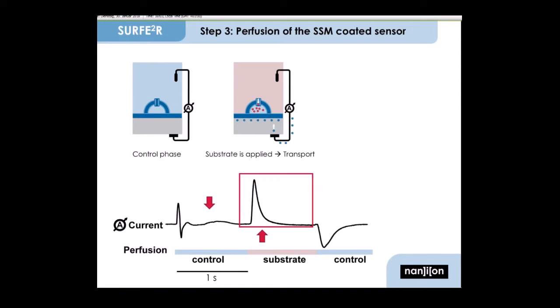When switching to a solution containing a transported substrate, a transient current signal occurs. The active transporter moves charge into the vesicles or liposomes. This charge generates an electric field and induces a current flow on the gold electrode, which is detected and amplified.